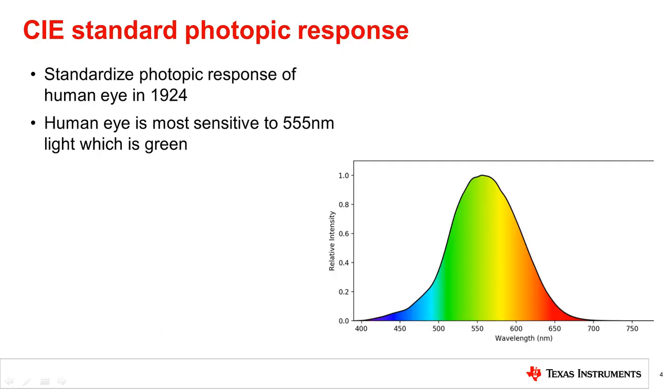Every human eye will vary in terms of the actual spectral response. The curves shown in the previous slide are from a CIE standard, which looks at how an average human eye will perceive intensity. Through a number of experiments, CIE defined the standard photopic response curve in 1924, which we will now focus on.